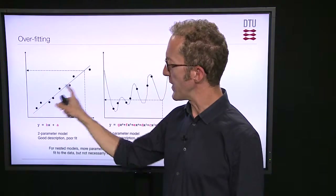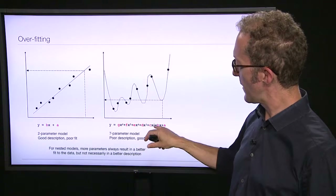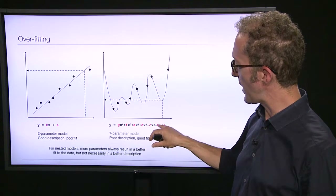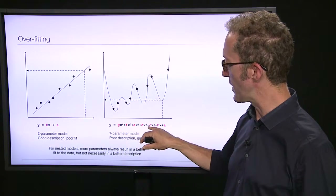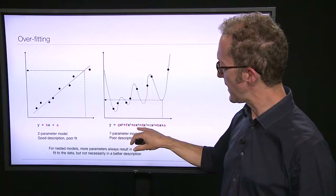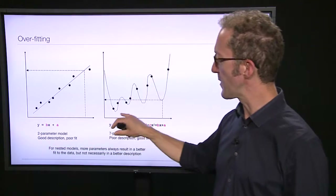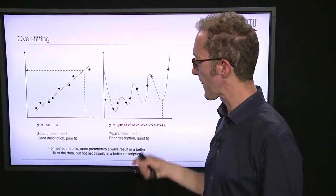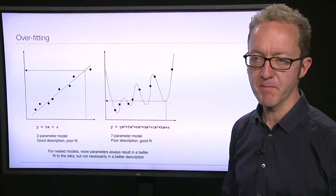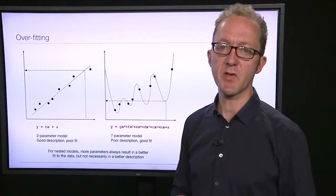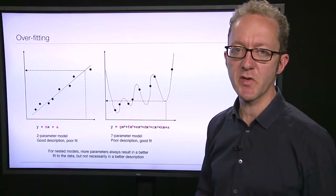It turns out that for nested models — models where one model is a subset of the other — as in this case, you can see that bx plus a are the final terms in the polynomial model; if we set g, f, e, d, and c equal to zero, then the polynomial model becomes the same as the linear model. So the linear model is nested within the polynomial model. For nested models, if you add more parameters you can always get a better fit, but that doesn't necessarily mean you'll get a better description. This is what we call overfitting: you are fitting the noise instead of capturing the interesting underlying regularities.